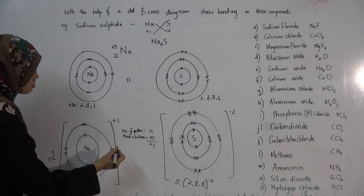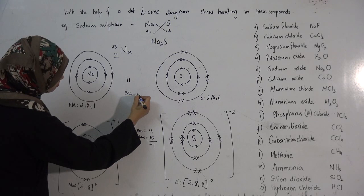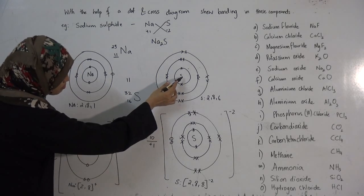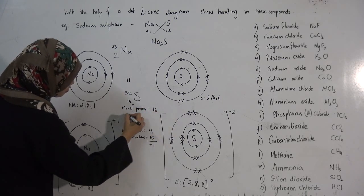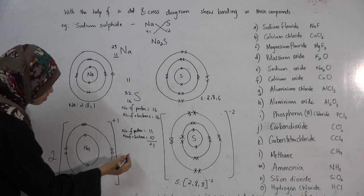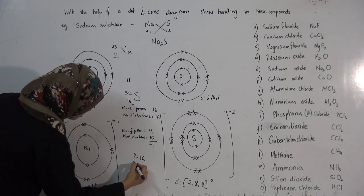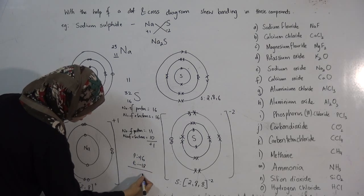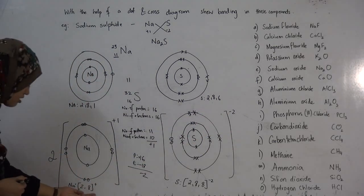The same rule applies to sulfur. Sulfur in the periodic table has a proton number of 16 and originally 16 electrons. But after bonding, the number of protons is 16 while electrons become 18. Since electrons are negatively charged and protons are positively charged, you have a minus 2 charge — that is the reason for the −2 charge on sulfur.